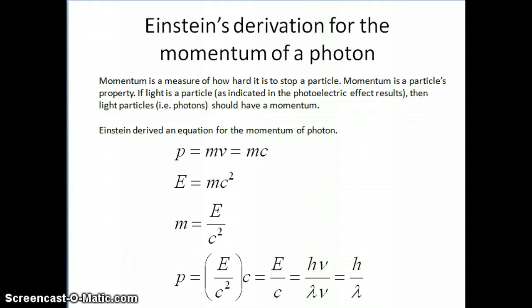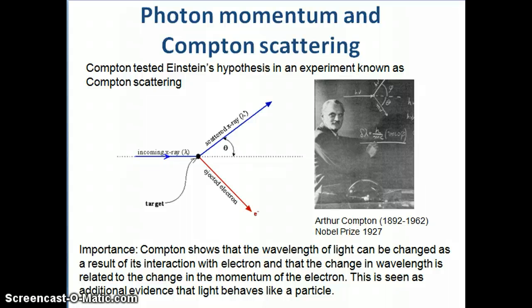Now, once he proposed that a photon has momentum, then people had to go out and show, you have to have experimental proof that this is really the case. The person who actually did the experimental proof was somebody called Arthur Compton, and he tested Einstein's hypothesis, and this experiment is now famously known as the Compton scattering experiment. Compton himself won the Nobel Prize in 1927, and again, this is going back to all the different people I've mentioned in this topic so far. Every one of them has won the Nobel Prize either one way or another.